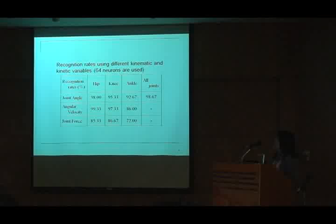So we think we observe some variation between subjects. So we're trying to use the self-organizing map neural networks to analyze the data. This table shows we use the 64 neurons to collect the data. So we can find no matter we use the kinematic data or kinetic data for data classification, we can get high recognition rates.